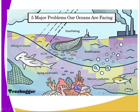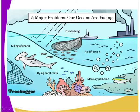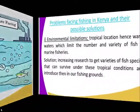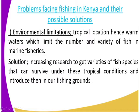From the diagram, we can identify the five major problems our oceans are facing. We have mercury pollution, dying coral rocks, overfishing, industries located next to the ocean and how they contribute, and other related problems. Let us look at these problems.